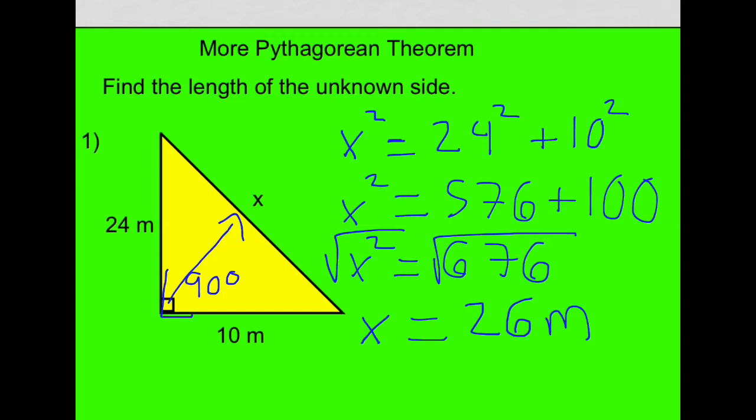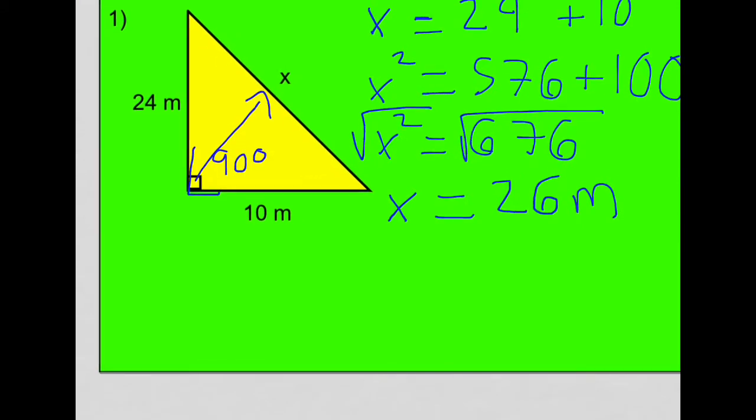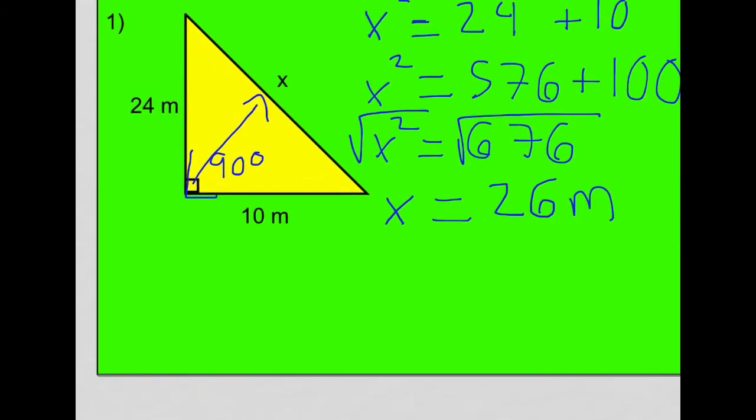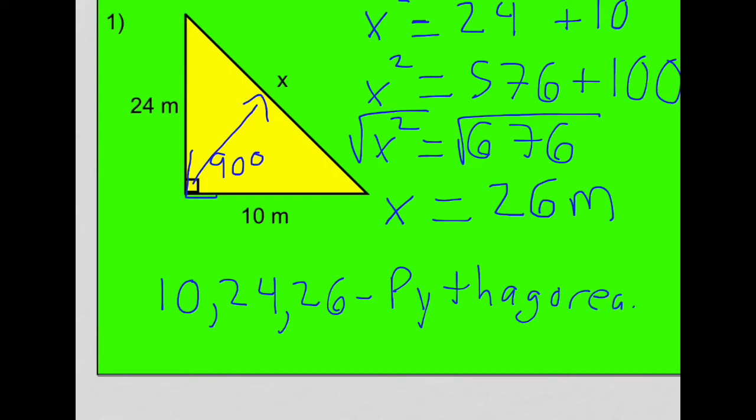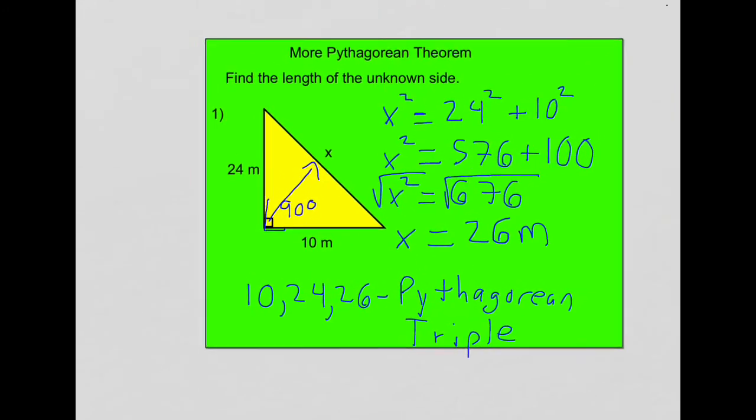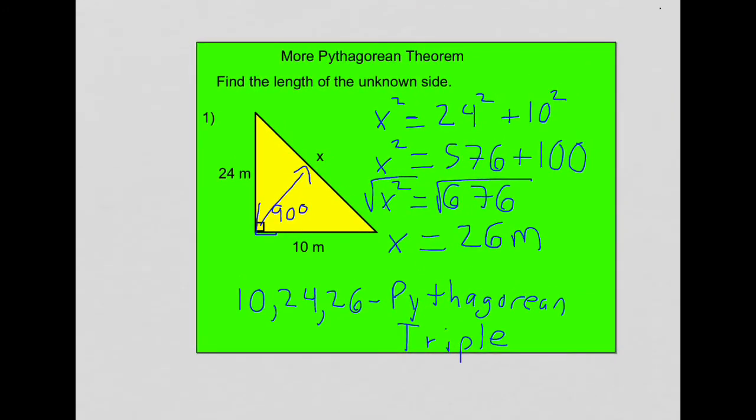And of course, you can recognize there that 26 is the longest side. The hypotenuse should always be the longest side. Now, since this is a perfect square, we would say a triangle with sides 10, 24, and 26 is called a Pythagorean triple. Now that's an example where we are missing the hypotenuse. The next example will be done slightly different. So see if you can pick up the difference. I'm going to flip forward.